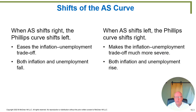Let's sum this up. When the aggregate supply curve shifts to the right, then the Phillips curve — which was that unemployment tradeoff graph — shifts to the left.